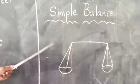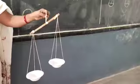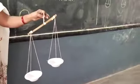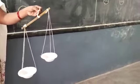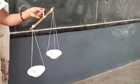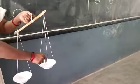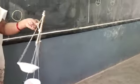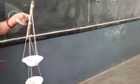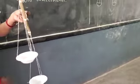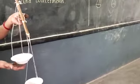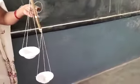Children, this is the simple balance. How do we use this simple balance? Let's use objects. This is the eraser — I am putting the eraser here. Now what happened? The heavier side is coming down and the lighter side is going up.